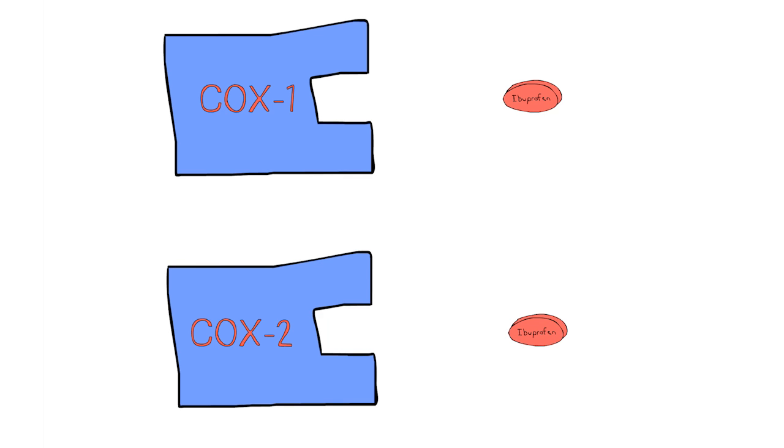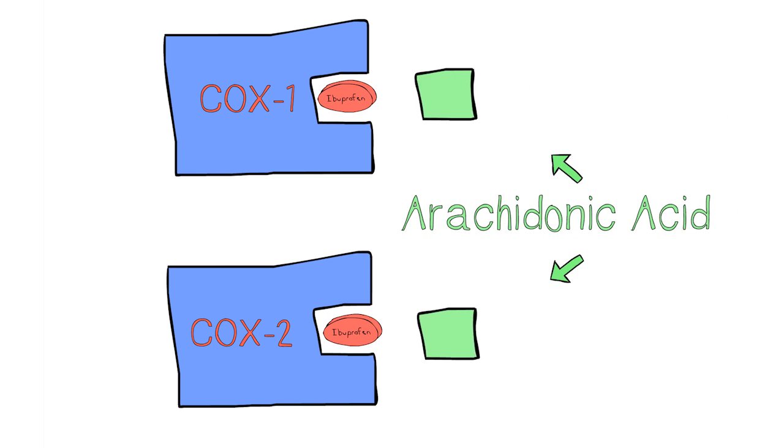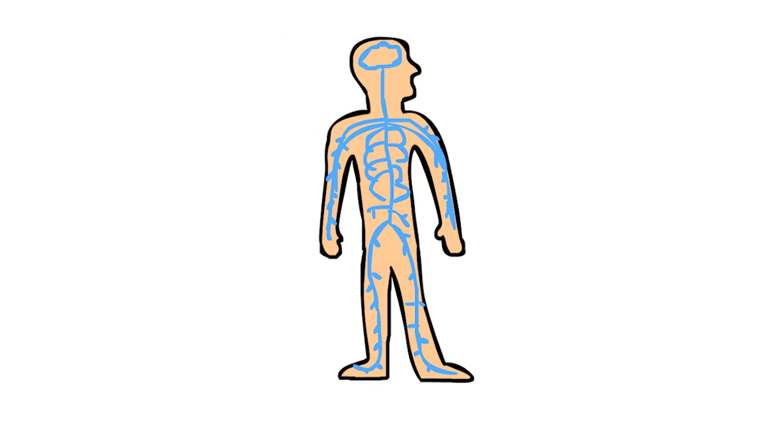The ibuprofen then tracks down and attaches to two enzymes named COX-1 and COX-2. This prevents the enzymes breaking down the arachidonic acid, in turn preventing pain because it now takes more to make the nociceptors send the pain signal to the brain.